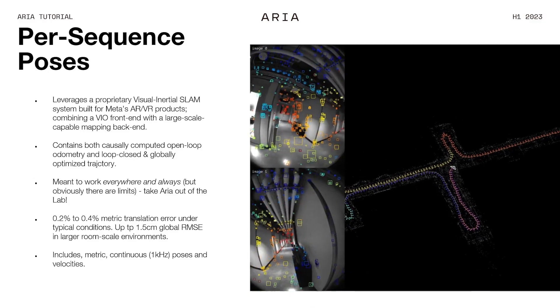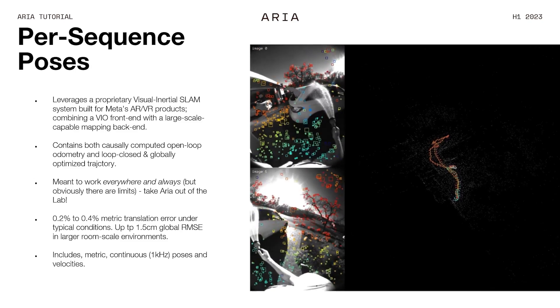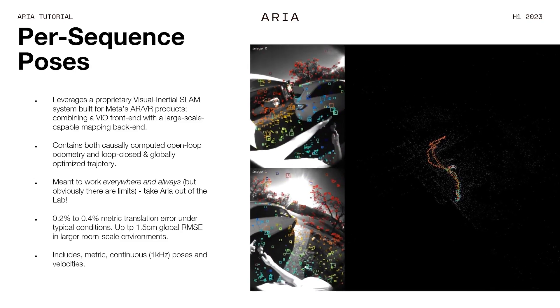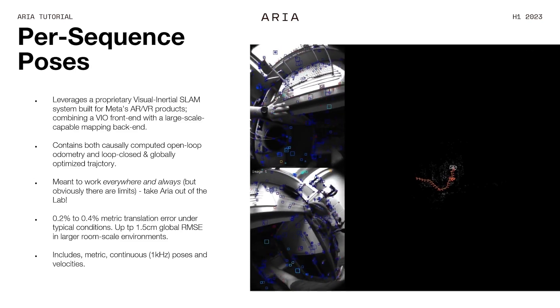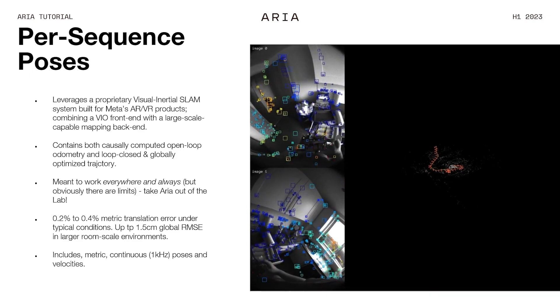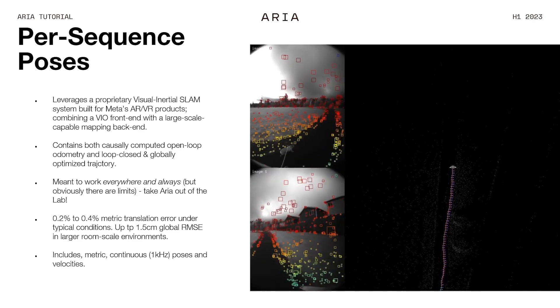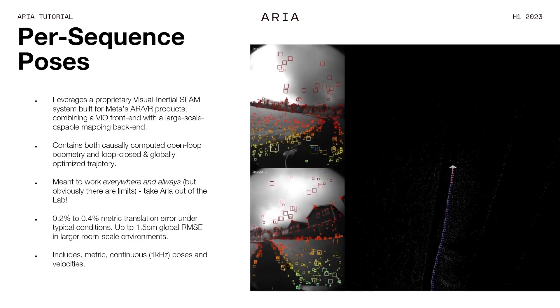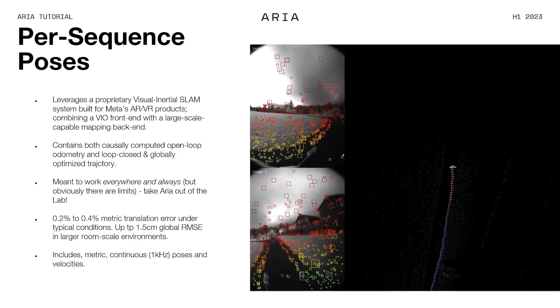It's very accurate — about 0.2 to 0.4% of translational motion, which translates to about 1.5 centimeters in a room about this size in terms of global accuracy. We also include uncertainty estimates and information about when it works and when it sometimes doesn't work.